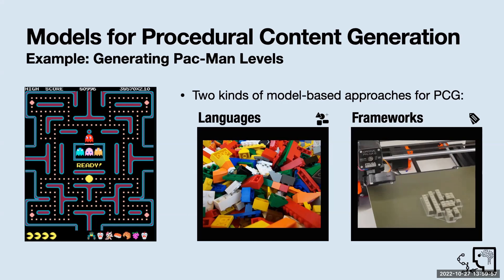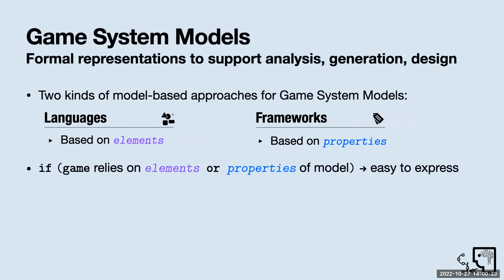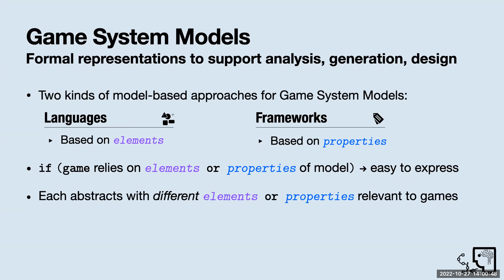We have examples of this out in the wild. An example of a language would be something like the VGDL, or the Video Game Description Language. An example of a framework, which is far more general and powerful, is Scepter by Chris Martin. The Scepter framework allows you to talk about properties that can change in stages and rule applications. The question of when to use one or the other is really contextual. The broad principle is: if the game you care to reason about relies on elements — in the case of languages — or properties — in the case of frameworks — that the model gives you, then it's easy to express that game and support it for analysis, design, or generation.